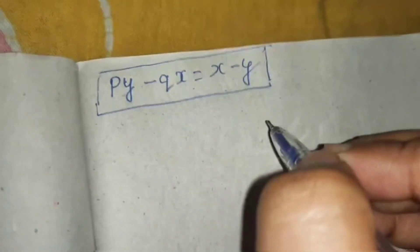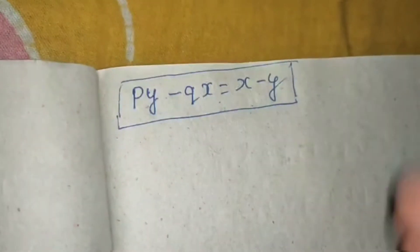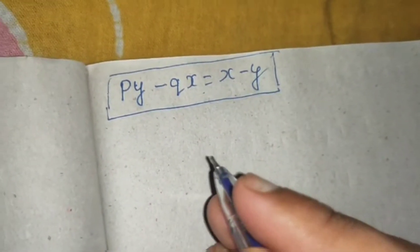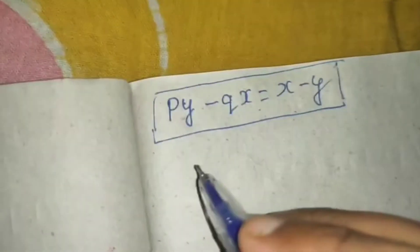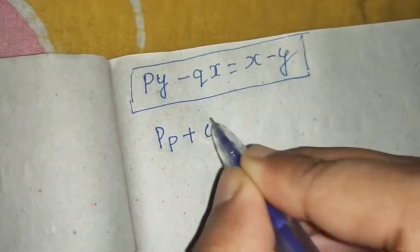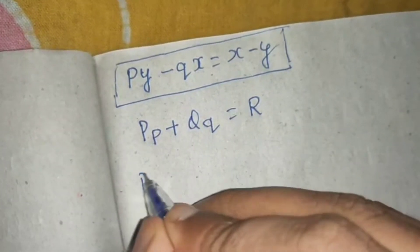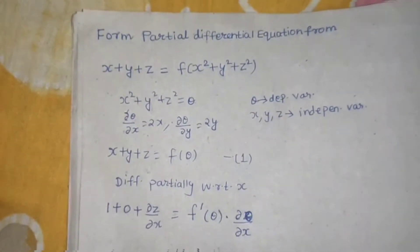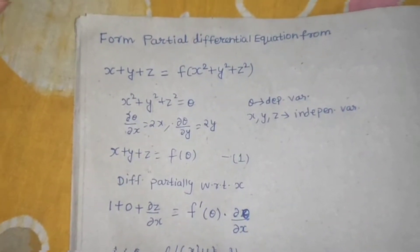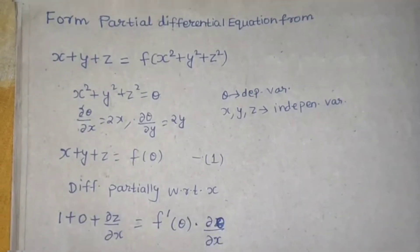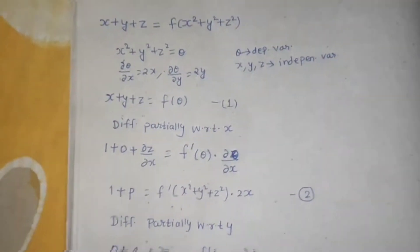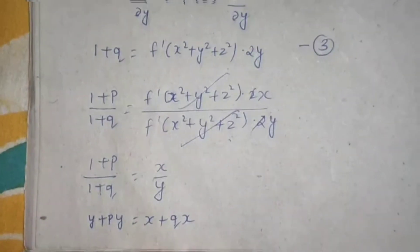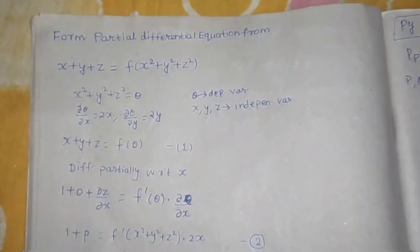So the final answer is py minus qx equals x minus y. This can appear as a question in upcoming sections of this chapter, where solving the partial differential equation gives this form. This is normally of the form Pp plus Qq equals R, where P, Q, and R are functions of x, y, and z — known as Lagrange's form. The substitution of theta helped avoid confusion with dependent and independent variables; otherwise the approach was similar to previous questions.